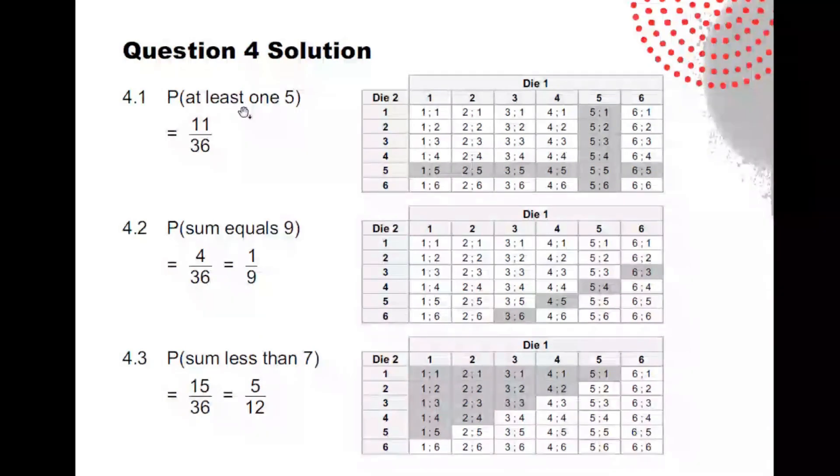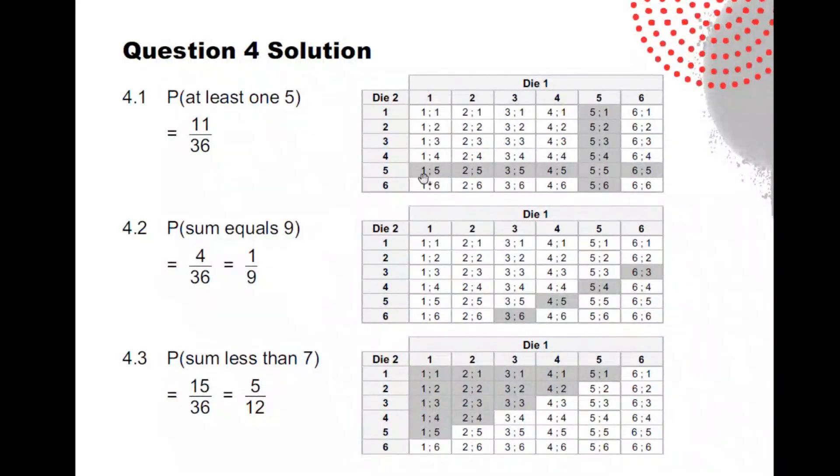At least one five, which means I can have one five, two five, three five, four five, five five, six five, or five one, five two, five three, five four. I've had that already. Five six. In other words, I've got 11 out of 36.